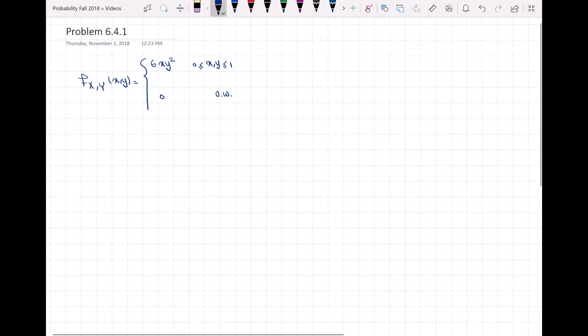This is problem 6.4.1, in which we have the joint PDF of random variables X and Y, as shown here.